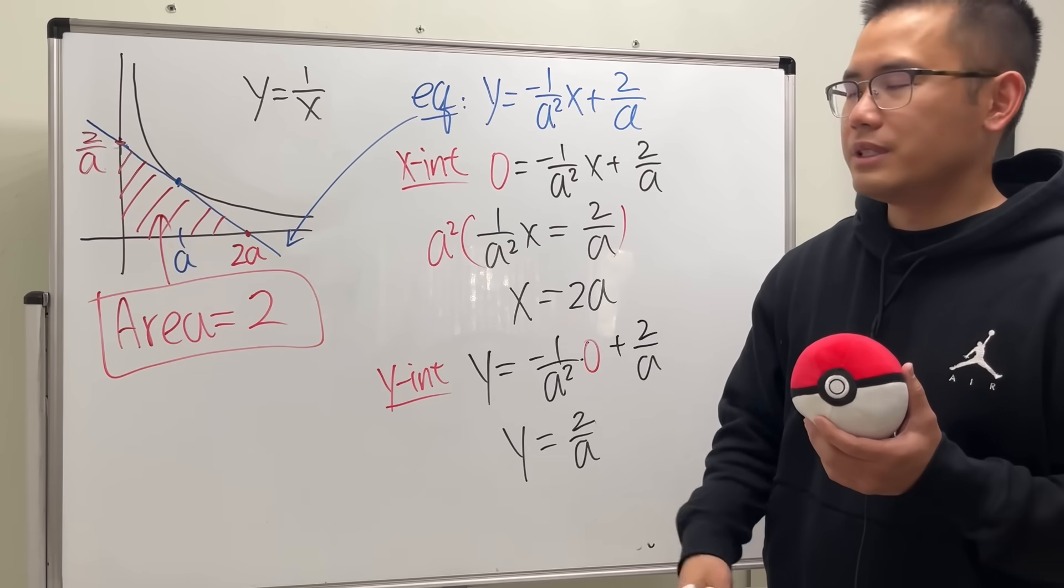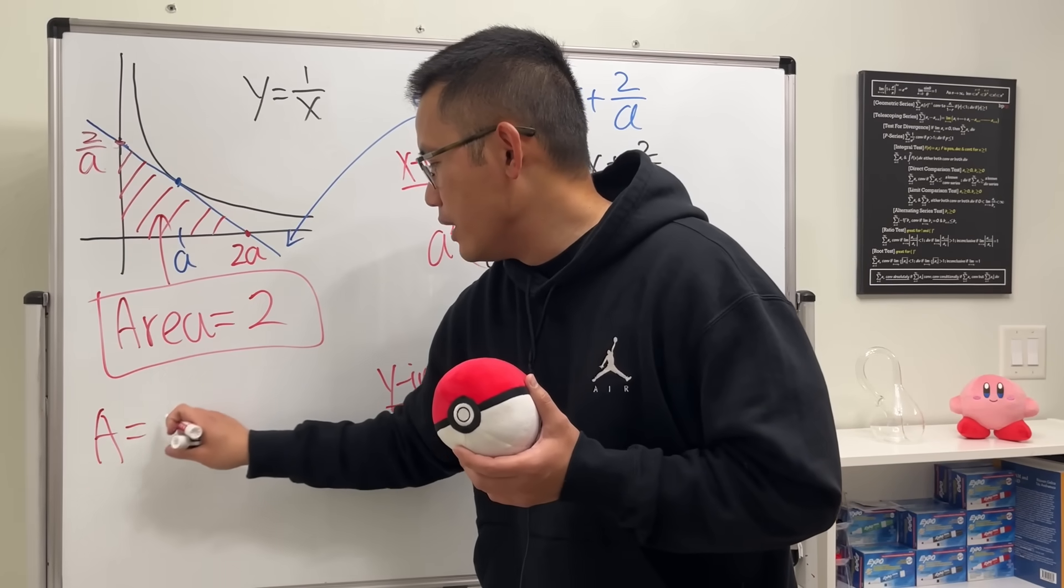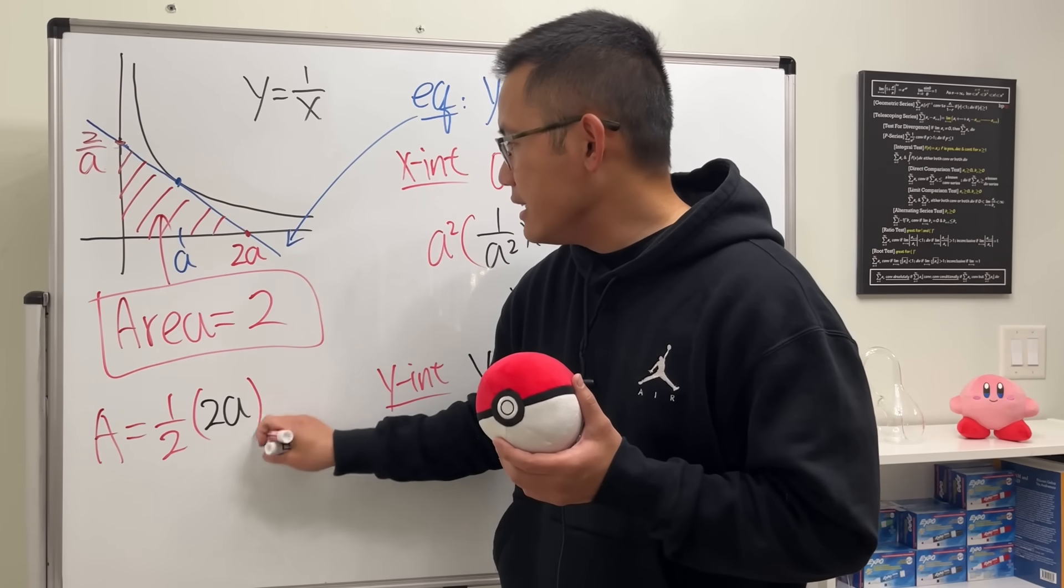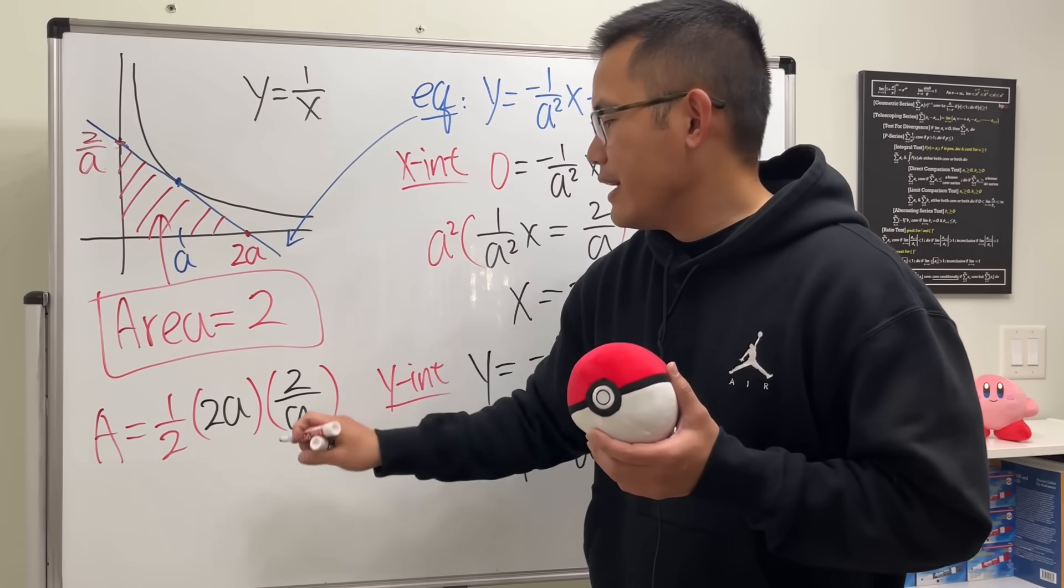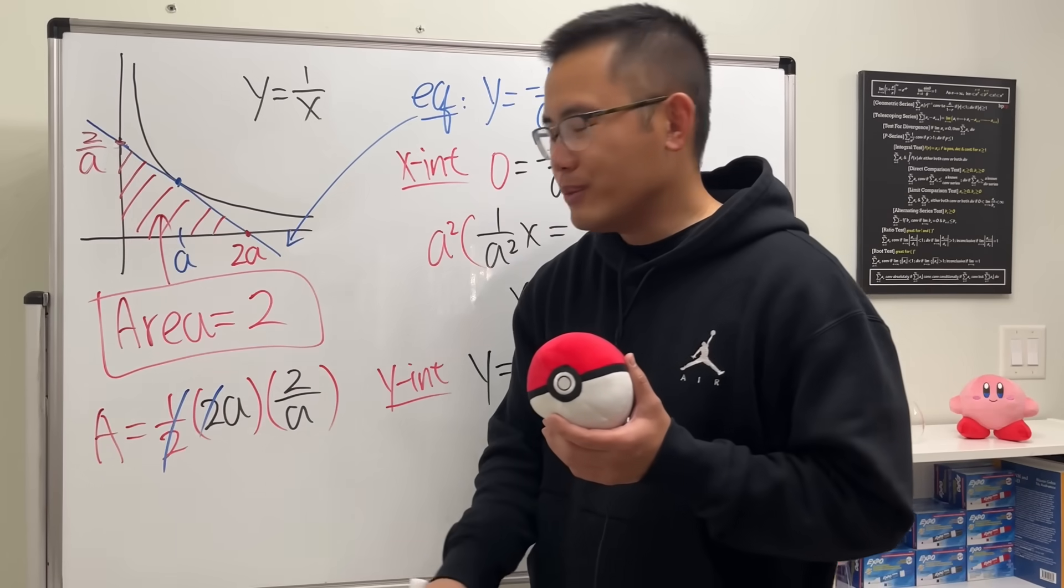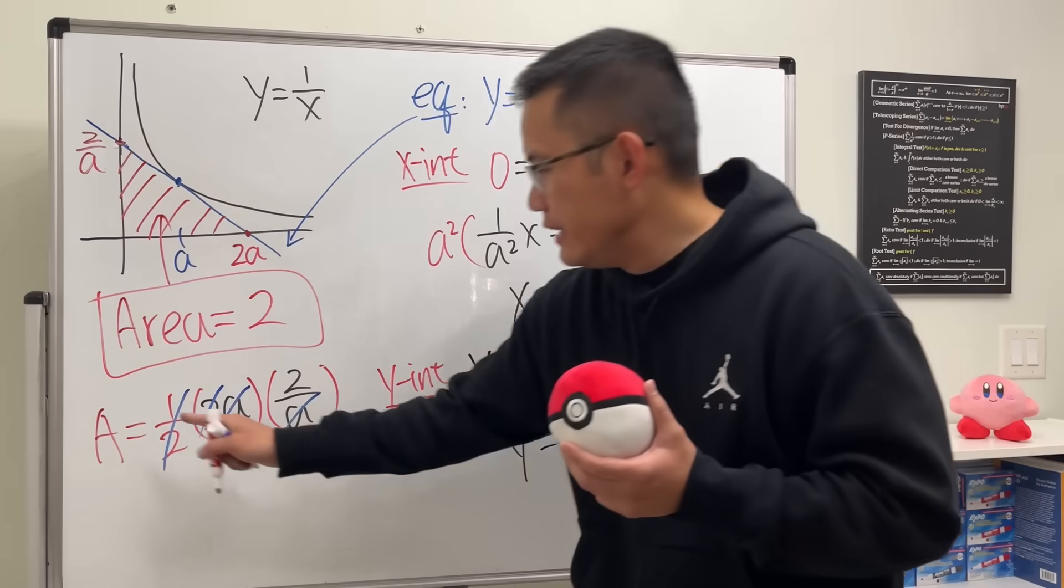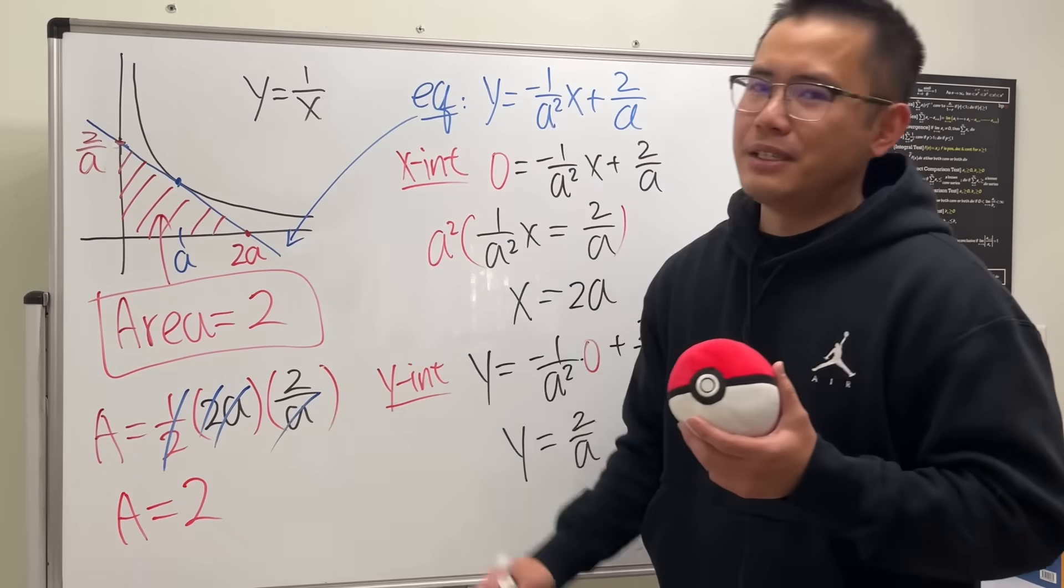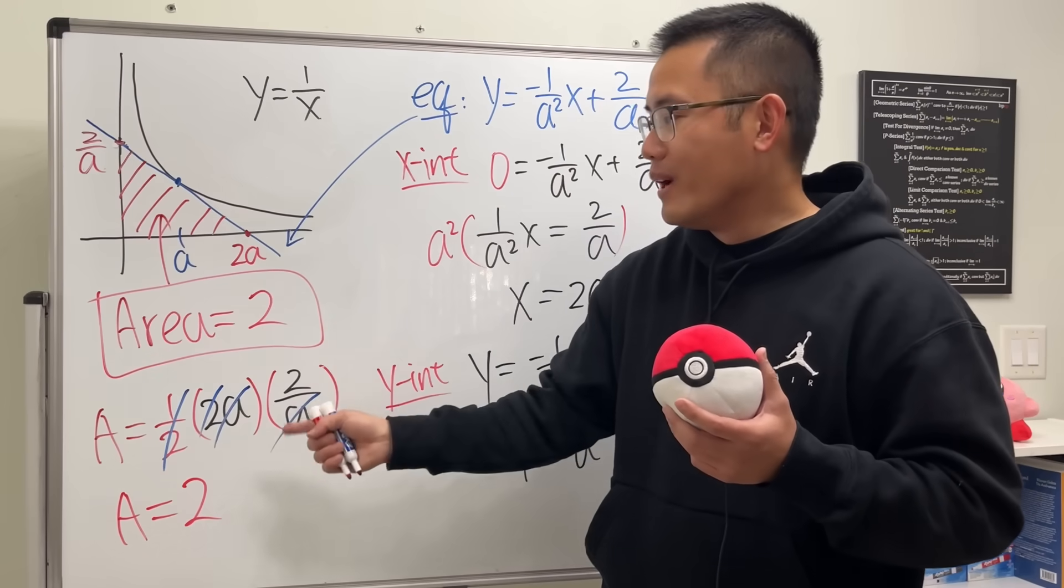And now the moment of truth. What is the area of that triangle? As we all know, area is just going to be 1 half base times height. The base is 2A and the height is 2 over A. So we just have to multiply this by 2 over A. And ladies and gentlemen, as we can see, 1 half and the 2 cancel, and this A and that A cancel. Congratulations. The area is just always going to be equal to 2. Aha! So that's what I told you. It doesn't matter where we put the tangent line earlier. We will always end up with 2.